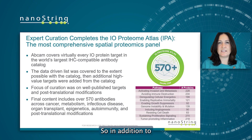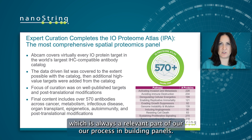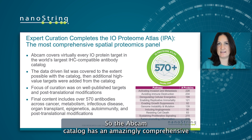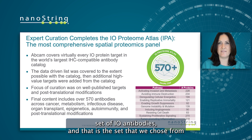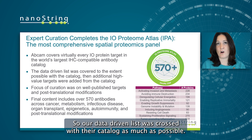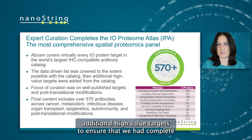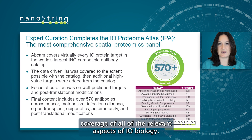In addition to the data-driven part, we employed expert curation, which is always a relevant part of our process in building panels. The Abcam catalog has an amazingly comprehensive set of IO antibodies, and that is the set that we chose from in order to get the actual antibodies to cover the targets we chose. Our data-driven list was crossed with their catalog, and as much as possible we covered every one of those targets. We then chose additional high-value targets to ensure complete coverage of all relevant aspects of IO biology.